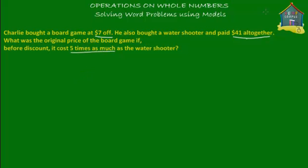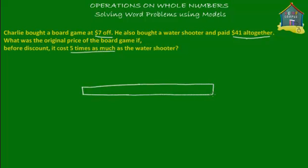Let's start with a model. Let's make a model for the original price of the board game — the original price means not the price that Charlie paid, but the original price before the discount. Charlie got a discount of $7 off, so he paid $7 less than the original price. This is the original price of the board game, and we'll write that down as BG, colored purple. This is what we have to find out.